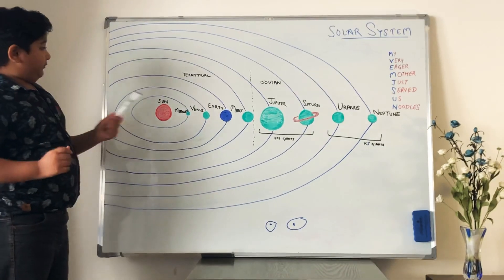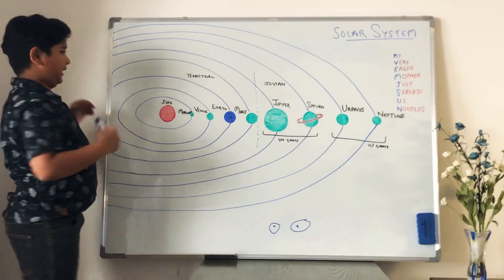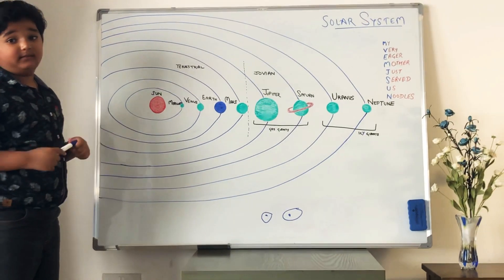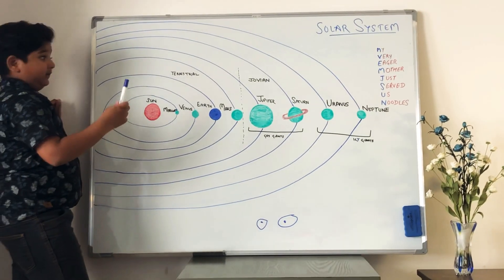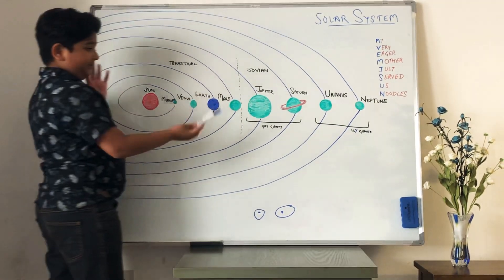And do you know that terrestrial planets have very few moons and Jovian planets have more moons than terrestrial planets. And terrestrial planets are small in size. Jovian planets are big in size.